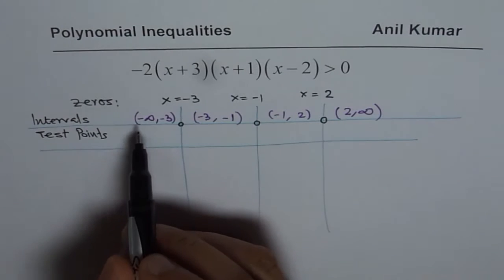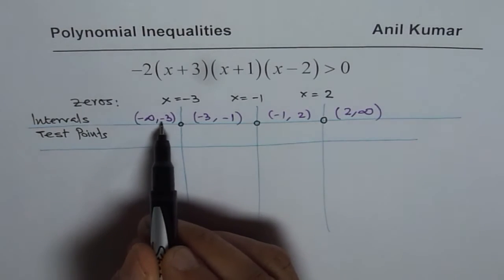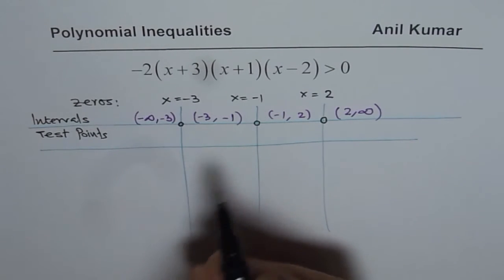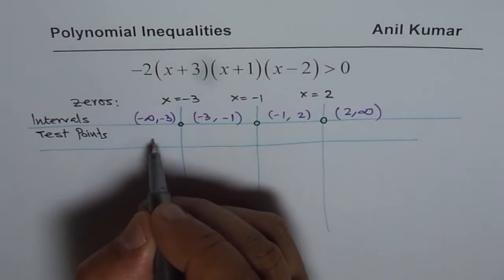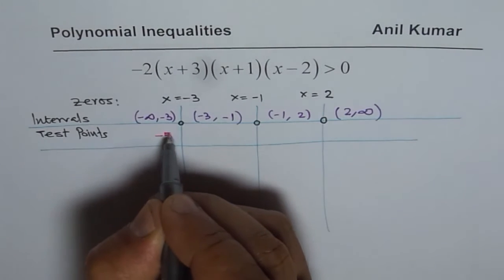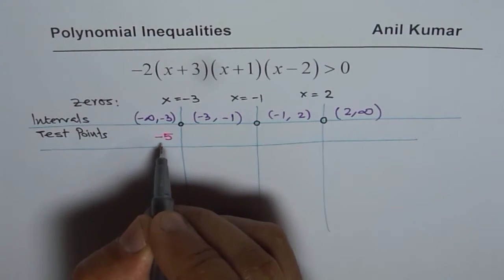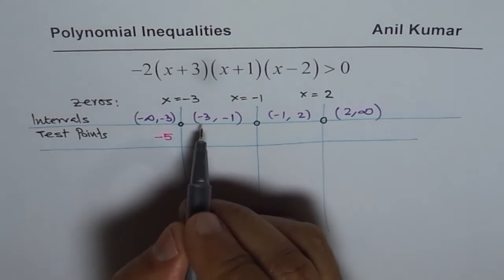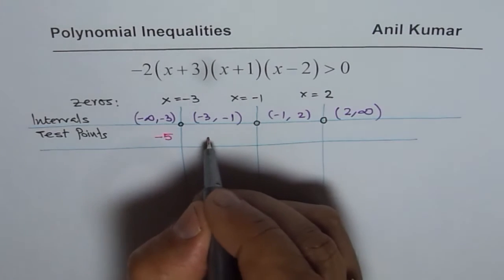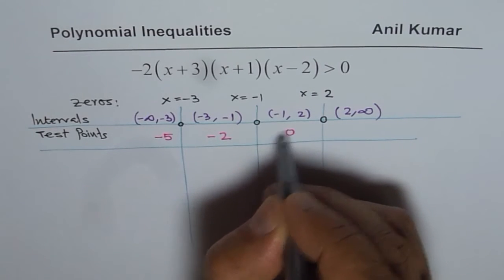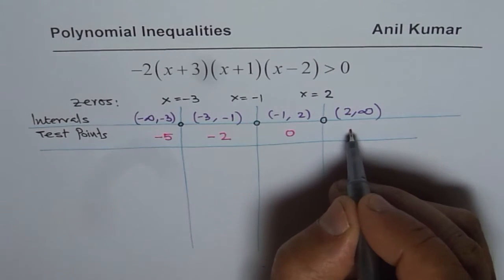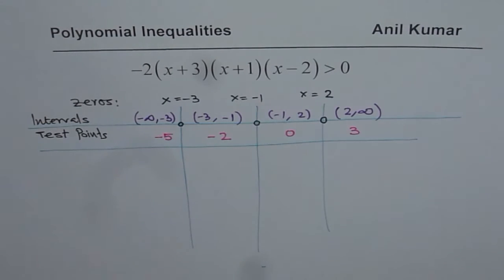A test point in this interval minus infinity to minus 3 could be minus 5. A test point between minus 3 and minus 1 could be minus 2. Between minus 1 and 2, zero is a good test point. From 2 to infinity, let us take 3 as our test point. You could take any point in that interval.